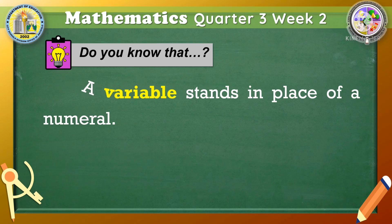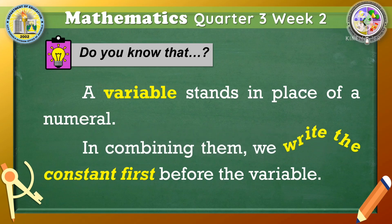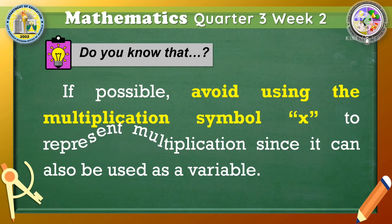A variable stands in place of a numeral. In combining them, we write the constant first before the variable. If possible, avoid using the multiplication symbol x to represent multiplication since it can also be used as a variable.